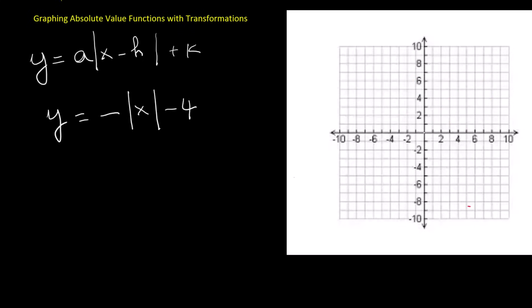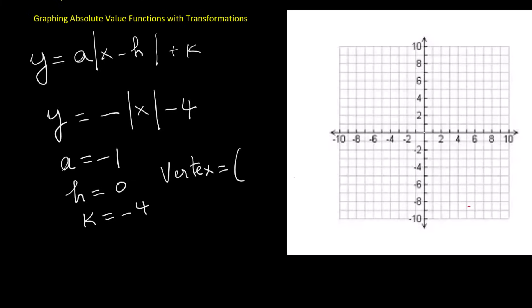Now let's look at a case where the absolute value graph is both reflected and shifted downward. The function is y equals the negative absolute value of x minus 4. In the general form y equals a times the absolute value of x minus h plus k, the value of a is negative 1, the value of h is 0, and the value of k is negative 4. This tells us the vertex is at 0 comma negative 4. On the coordinate plane, first place the vertex at 0 comma negative 4.